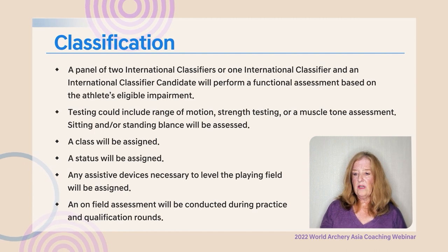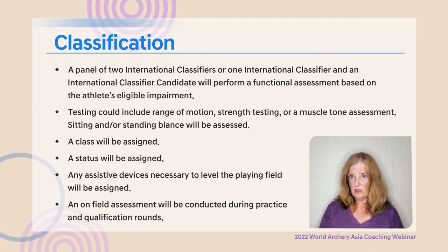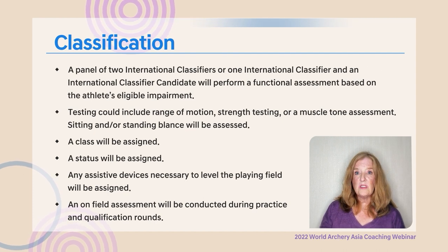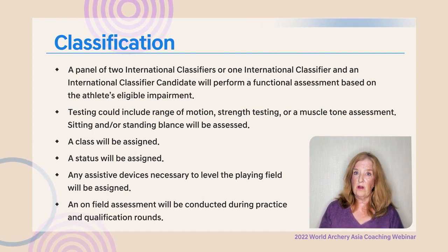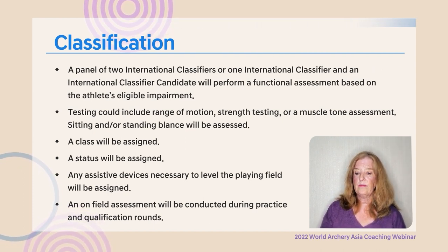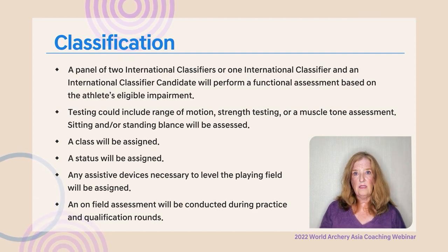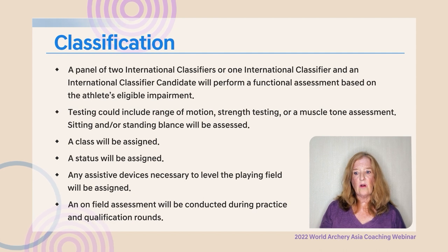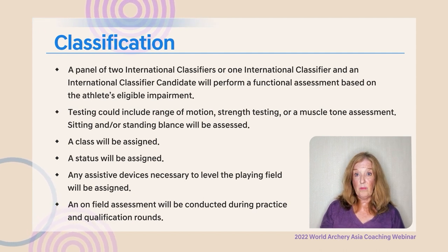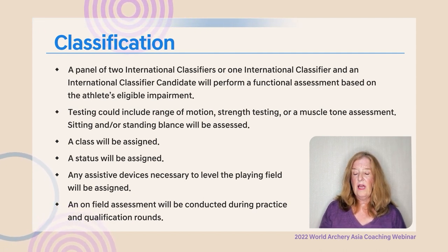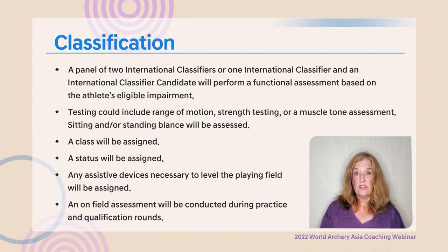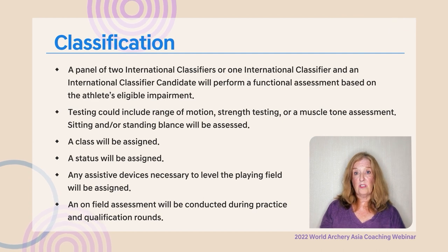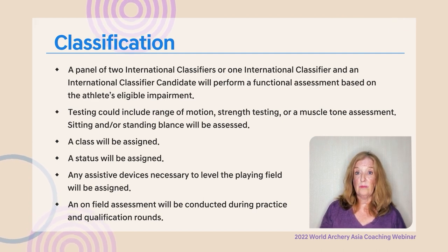Testing could include range of motion, muscle testing, or testing for abnormal muscle tone depending on the athlete's limitation. Then a class is assigned, a status is assigned, and any assistive devices they are allowed to use to level the playing field are assigned. Finally, an on-field observation is conducted to make sure what we see on the field matches what was seen in the classification room.